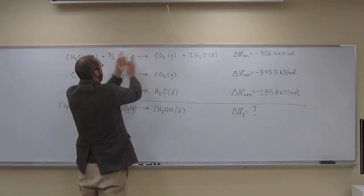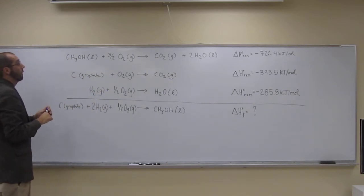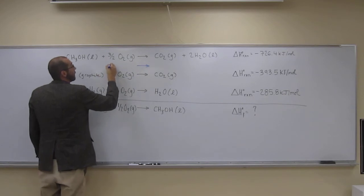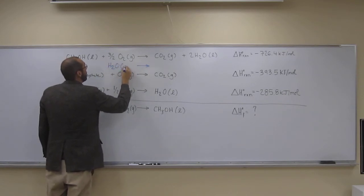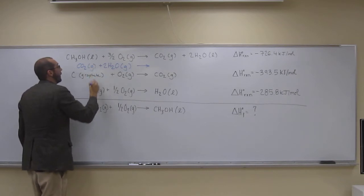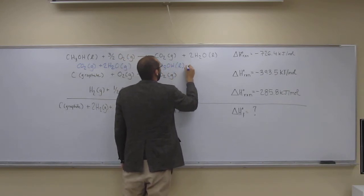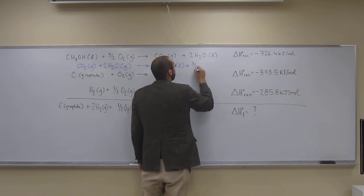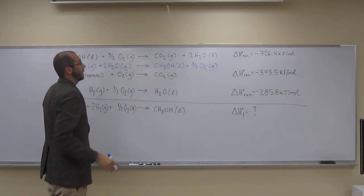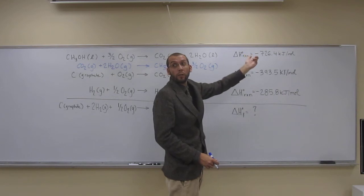So for this reaction here, we're actually going to flip it around. Let me get my blue pen out so we can turn it around with a different color. So what are we going to have here? 2H2O gas and CO2 gas. And over here, methanol liquid plus 3 halves O2 gas. So that doesn't only mess with the reactants and products, but it changes the heat of reaction.